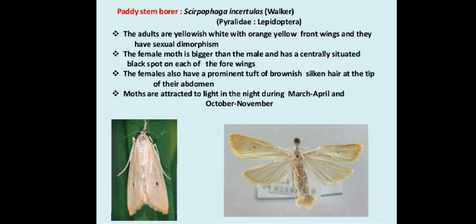The first pest is the paddy stem borer, which is a major pest among all others. Scirpophaga sp., belonging to the family Pyralidae, order Lepidoptera. The adults are yellowish white with orange-yellow forewings and they show sexual dimorphism. The female moth is bigger than the male and has a centrally situated black spot on each forewing.